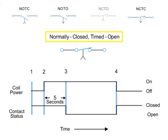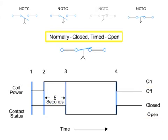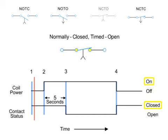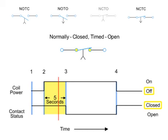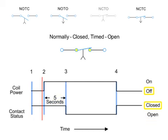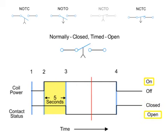Thus, the contacts close immediately when the coil is energized and open five seconds after the coil is de-energized. Next, we have the normally closed, timed open contact. This type of contact is normally closed when the coil is unpowered or de-energized. The contact is opened with the application of power to the relay coil, but only after the coil has been continuously powered for the specified amount of time — in this case, five seconds. Thus, the contacts open five seconds after the coil is energized and close immediately when the coil is de-energized.